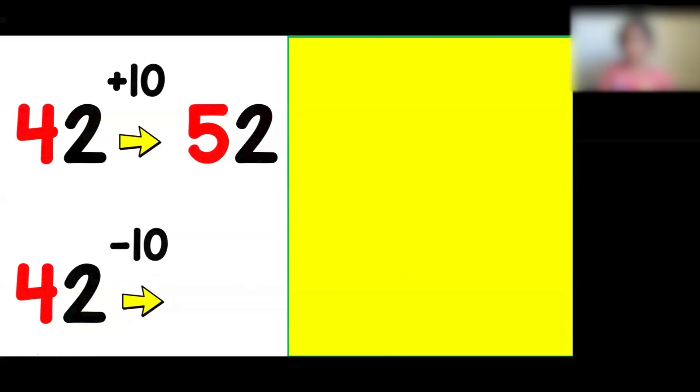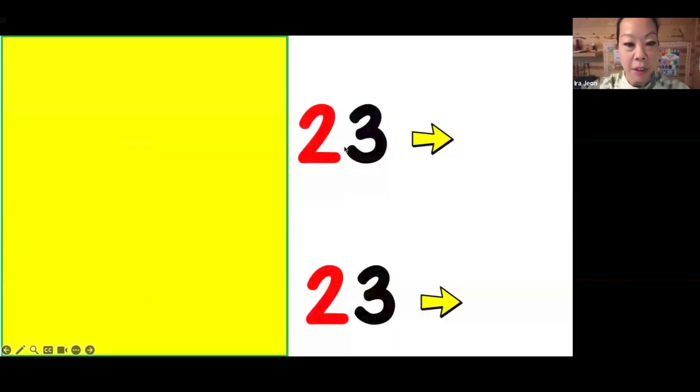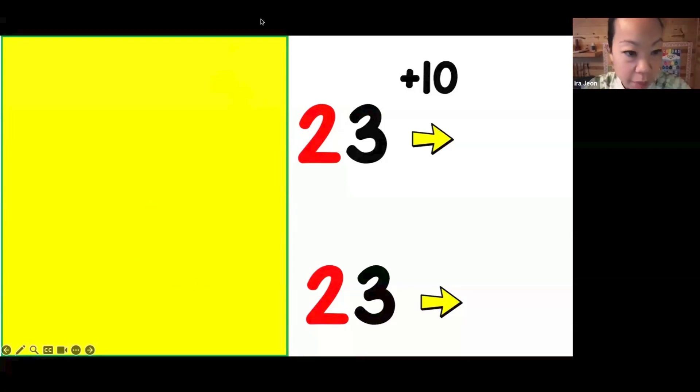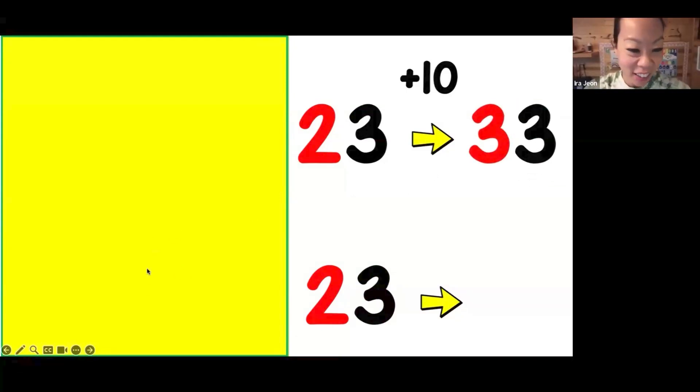If I have 23 and I want to find 10 more than 23, what would be the amount? You guys can probably do it in your head at this point, right? Sanaya, what did you get? What is 10 more than 23? 24? That would be one more. So 10 more, the 3 would stay the same, the 2 goes up by one. So what would be that number? 33. Good.